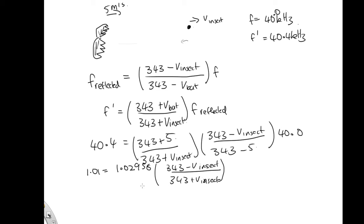And then just rearranging this and moving all the terms for the velocity insect over to one side, we end up with the velocity of the insect is equal to 3.31 meters per second. And I'll leave that algebra as a little task for you to try.